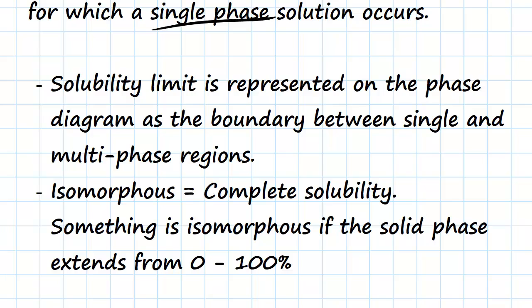Another definition: isomorphous means complete solubility. So something is isomorphous if the solid phase, for example, extends all the way from 0 to 100%, so all the way across one side to the other side of the graph.